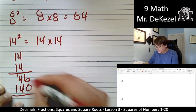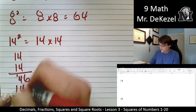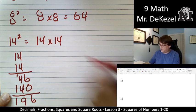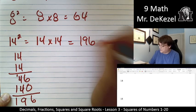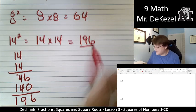And I'm going to go ahead and add all of these. 6 plus 0 is 6. 4 plus 4 plus 1 is 9. 1 is 196. So 14 times 14 is 196. You're going to learn to recognize this number as well.